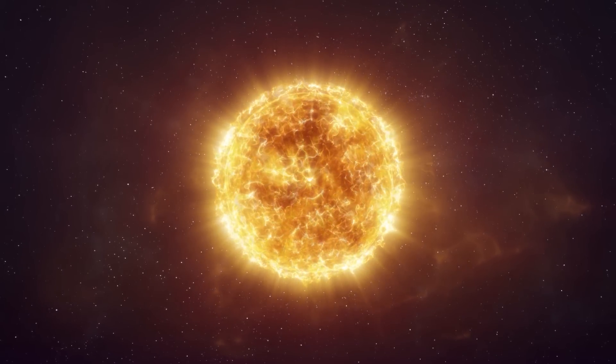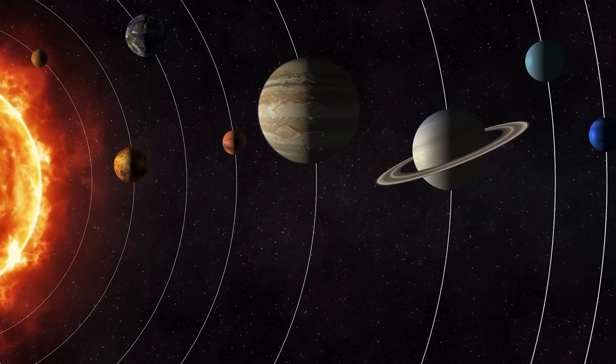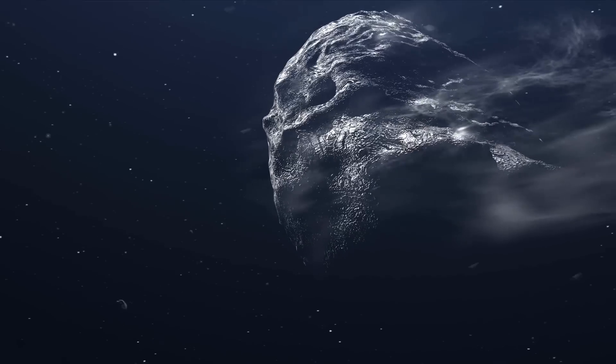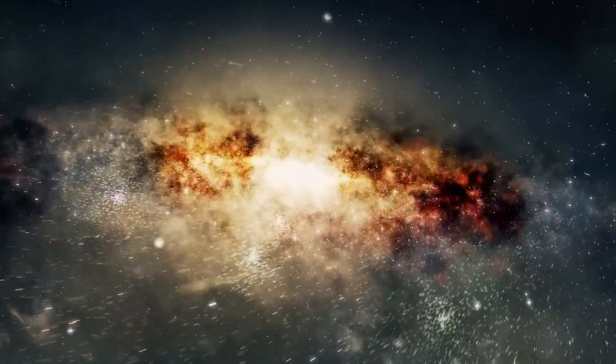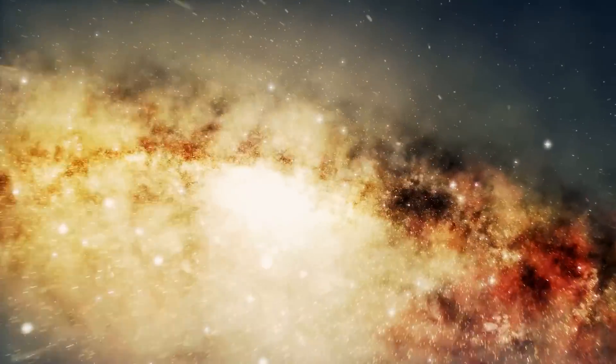It consists of one star, which we call the Sun, eight planets, a few billion asteroids, and a few more billion comets, but this is not the end of it. Spread in the solar system, there are a lot of gas and dust here and there.